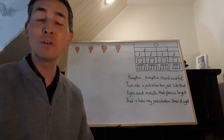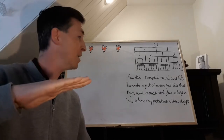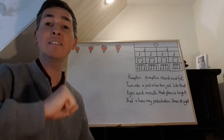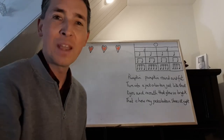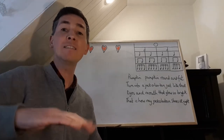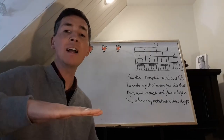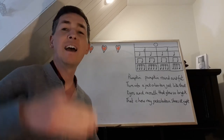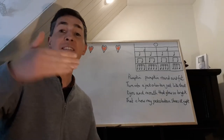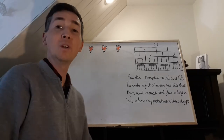I'm going to sing it all the way through first, then I'll do a line at a time — see if you can sign me the notes back as well. Pumpkin, pumpkin, round and fat, turn into a jack-o'-lantern just like that, eyes and mouth that glow so bright, that is how my jack-o'-lantern shines at night. Good, well done.